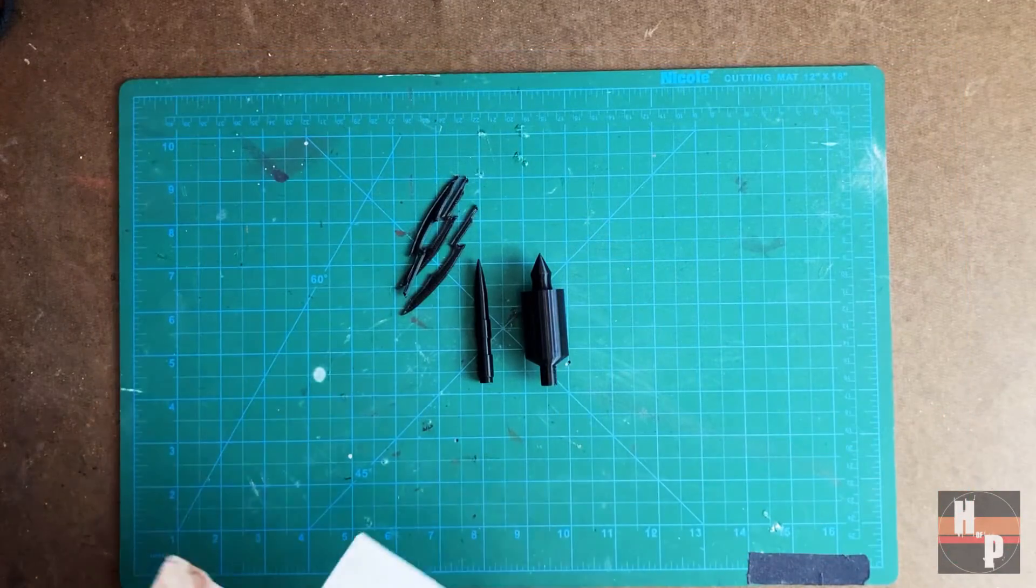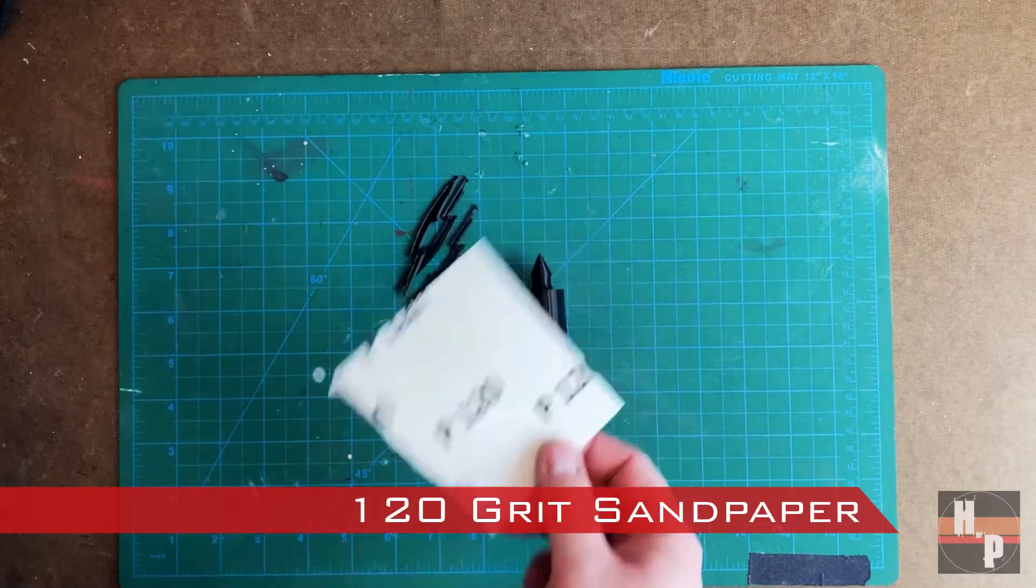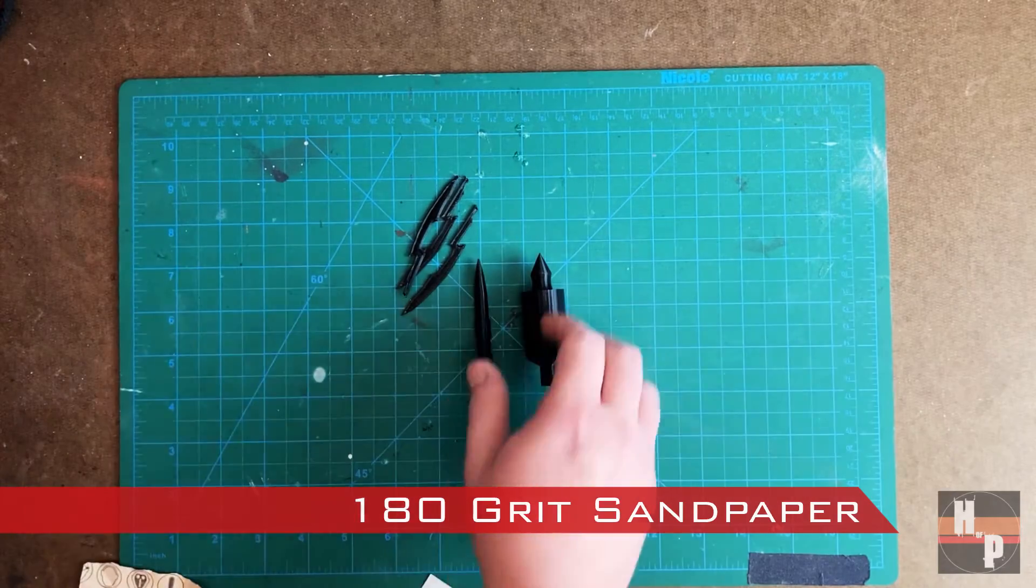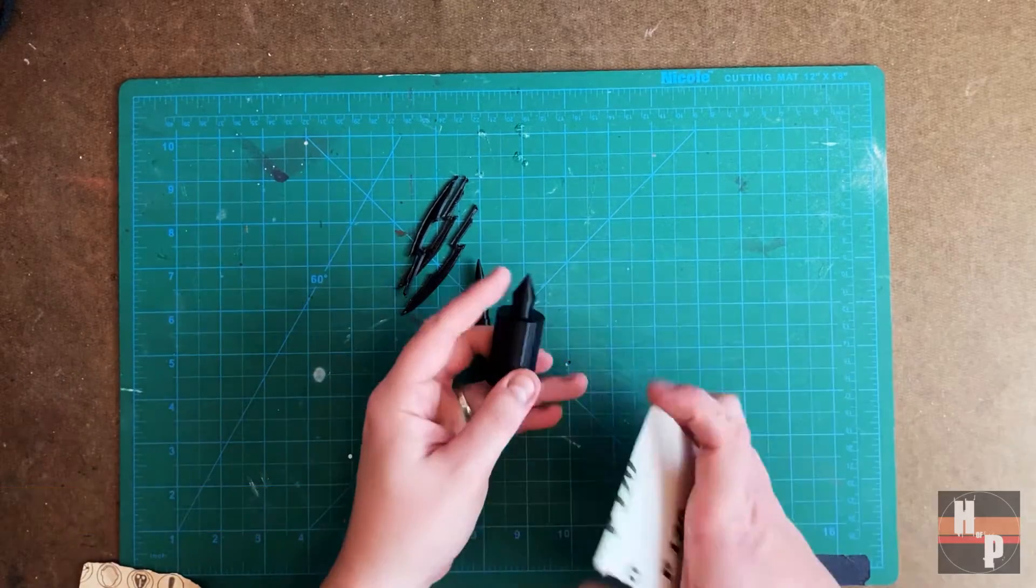When the tips were finished printing, I started smoothing their surfaces with a 120 grit sandpaper and then followed directly behind that with a 180 grit sandpaper. This will remove the print lines.